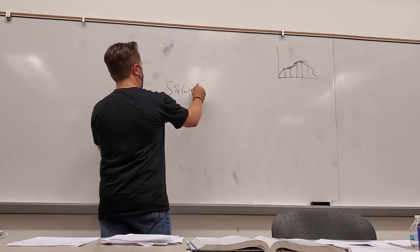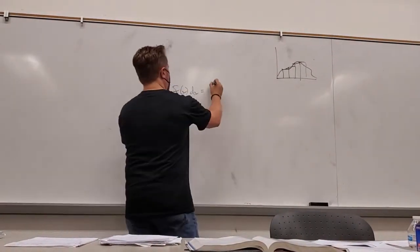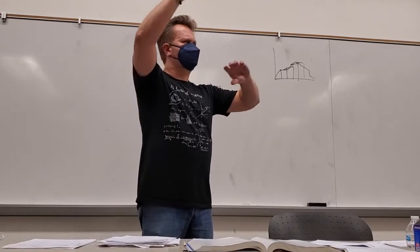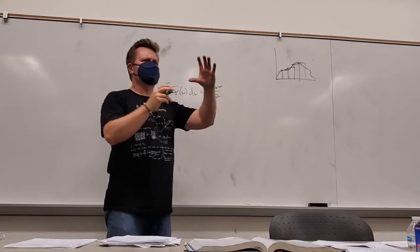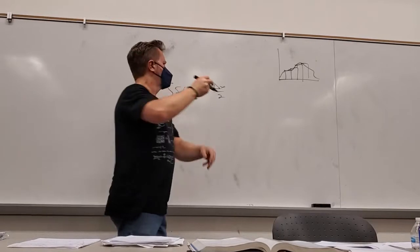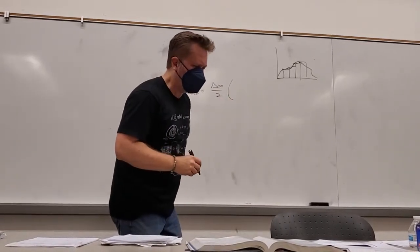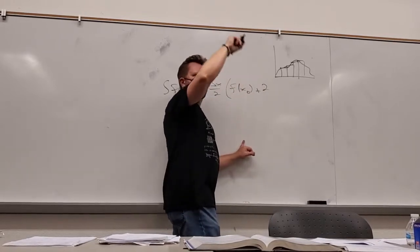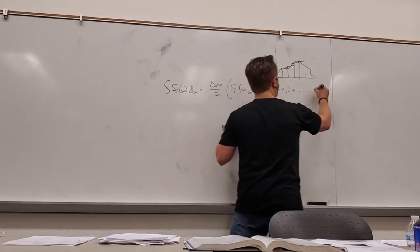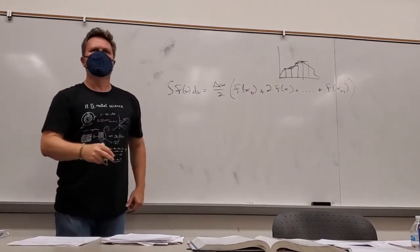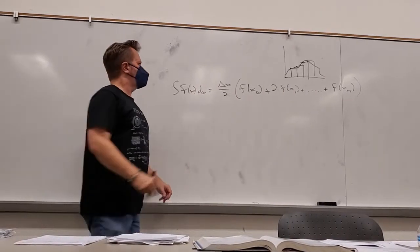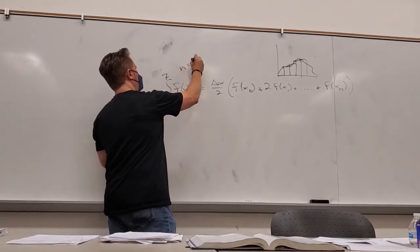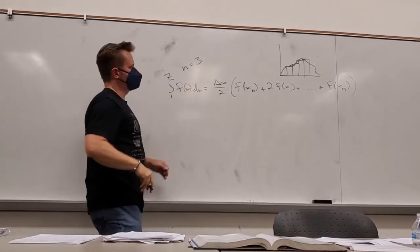Trapezoidal rule still has the width cut in half — remember, because the area of a trapezoid is one-half times height times sum of the bases. Delta x is basically the height. You're adding up all these trapezoids, and a trapezoid sitting next to another one shares the same side — that's why you have two of these.